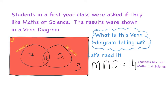The next part I would look at in my diagram is the part outside of the circles. There are three people outside of the circles. What that means is those three people are part of the class — part of the universe — but they did not choose maths or science. So perhaps they don't like either.